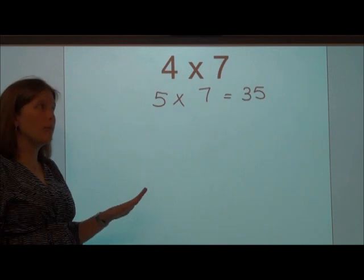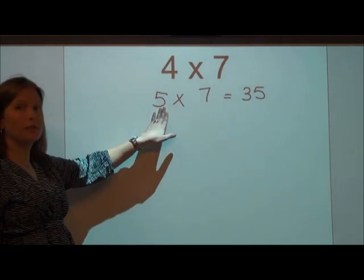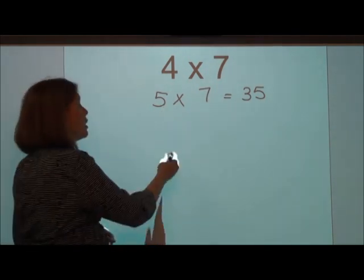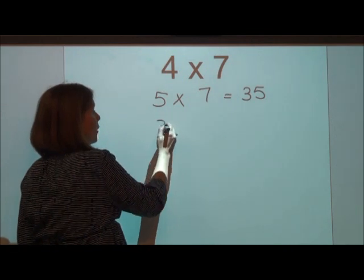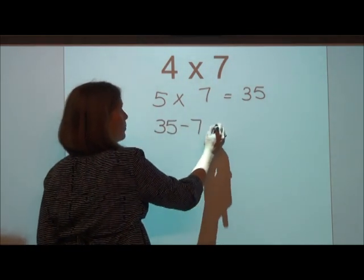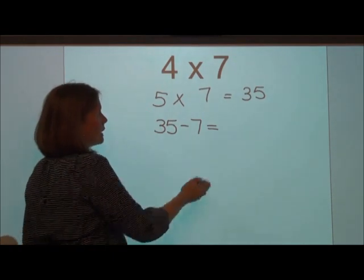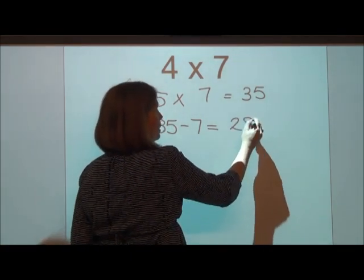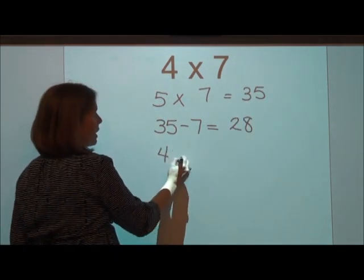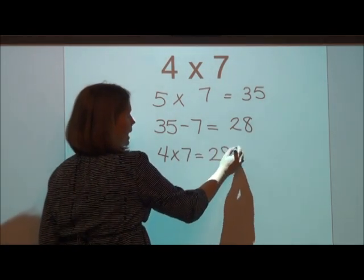We have to remember though, we added an extra group of 7 to get that 5. So we are going to take that 35 and we're going to subtract that group of 7 away and that's going to get us 28. So the product of 4 times 7 is going to get us 28.